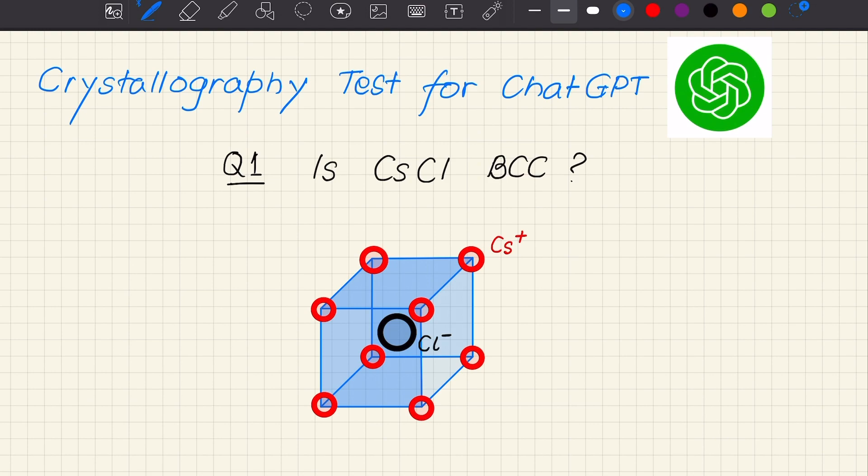So the unit cell of the cesium chloride structure is shown here. It's a cubic unit cell with cesium ions Cs+ at the corners of the cube and the chloride ion Cl- right at the body center of the cube.